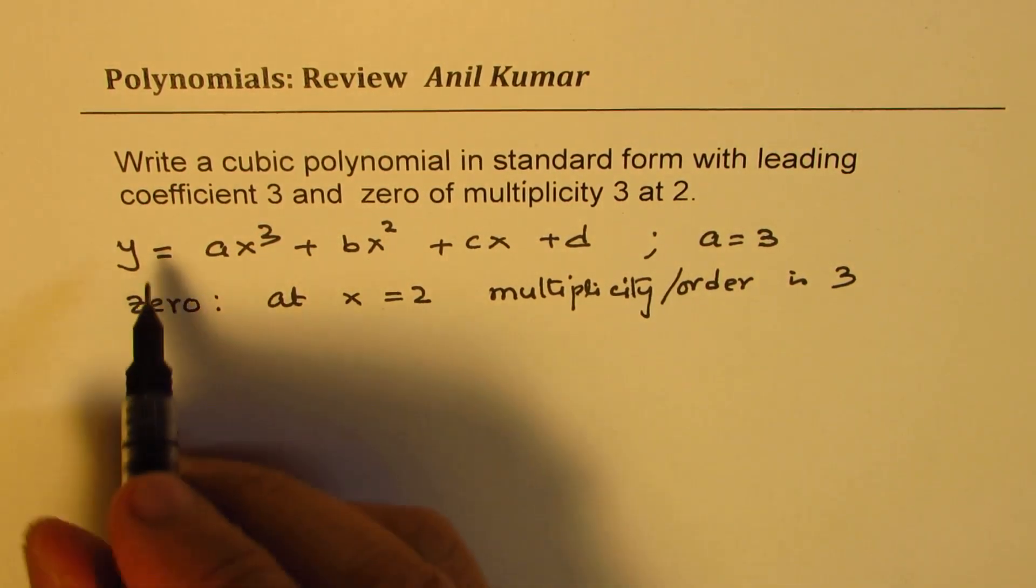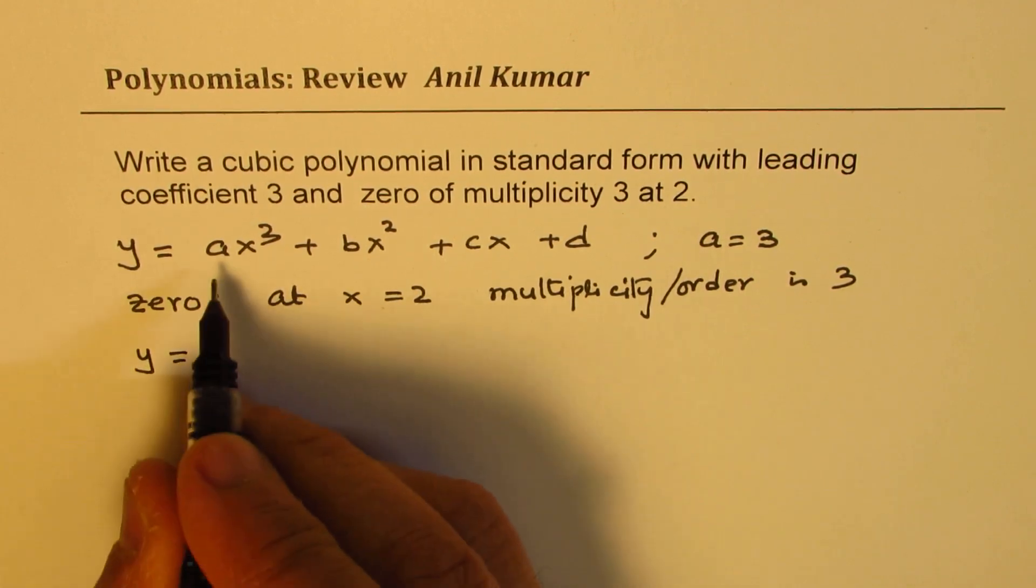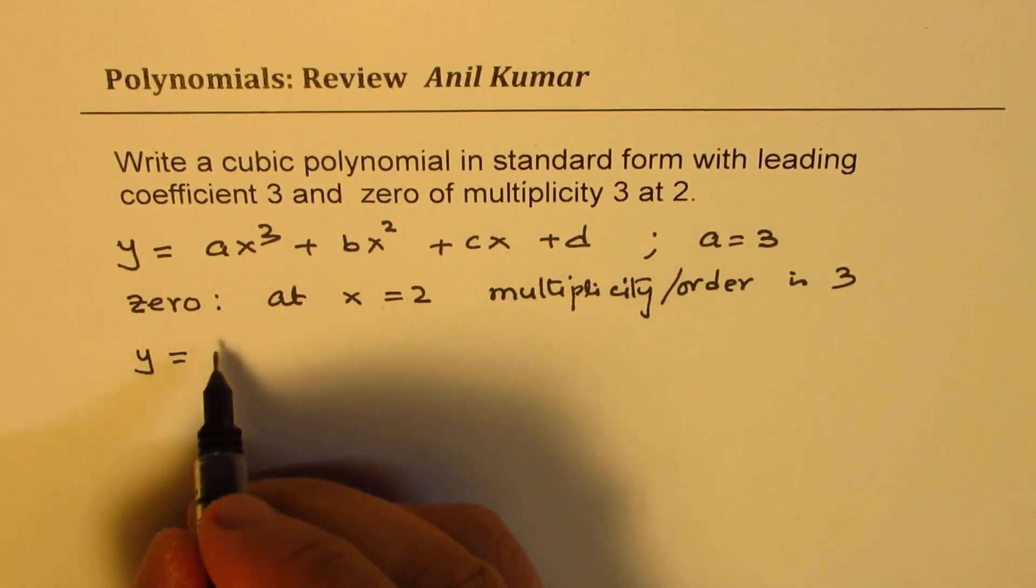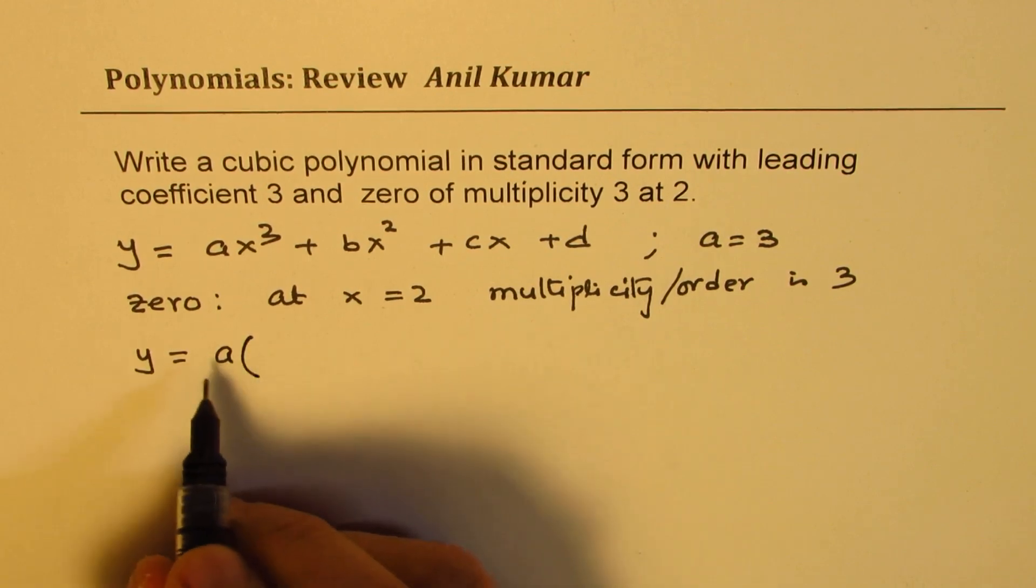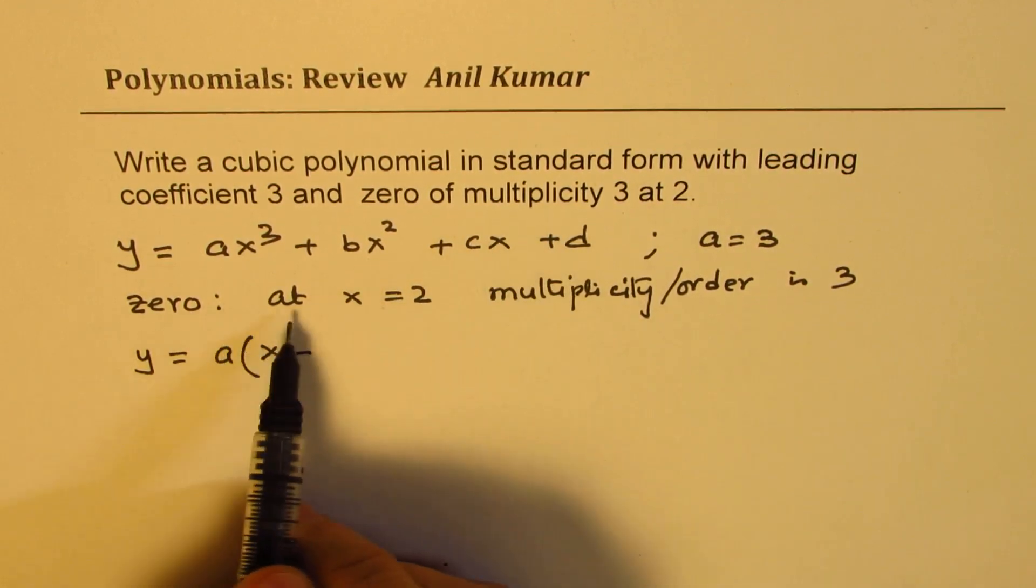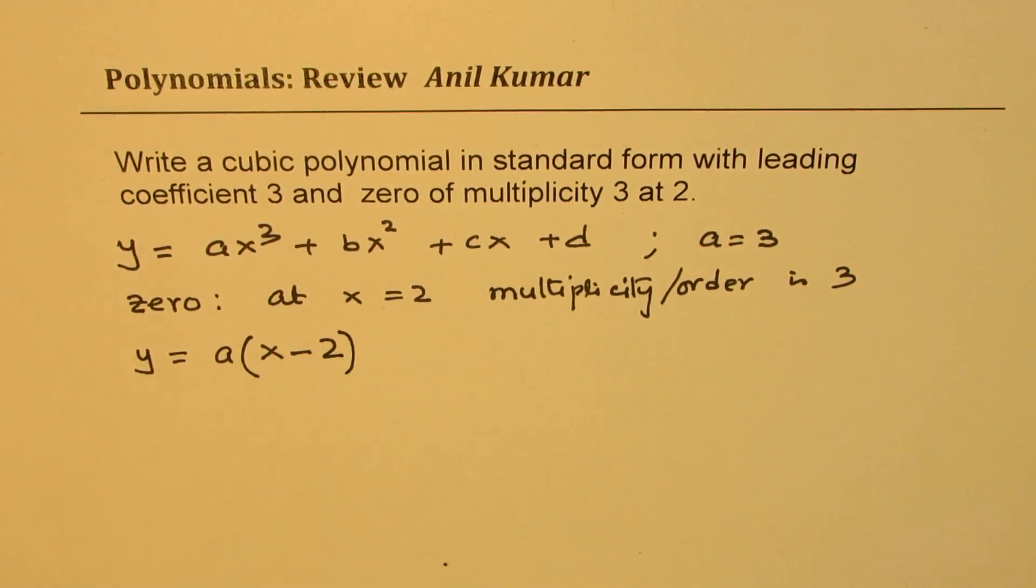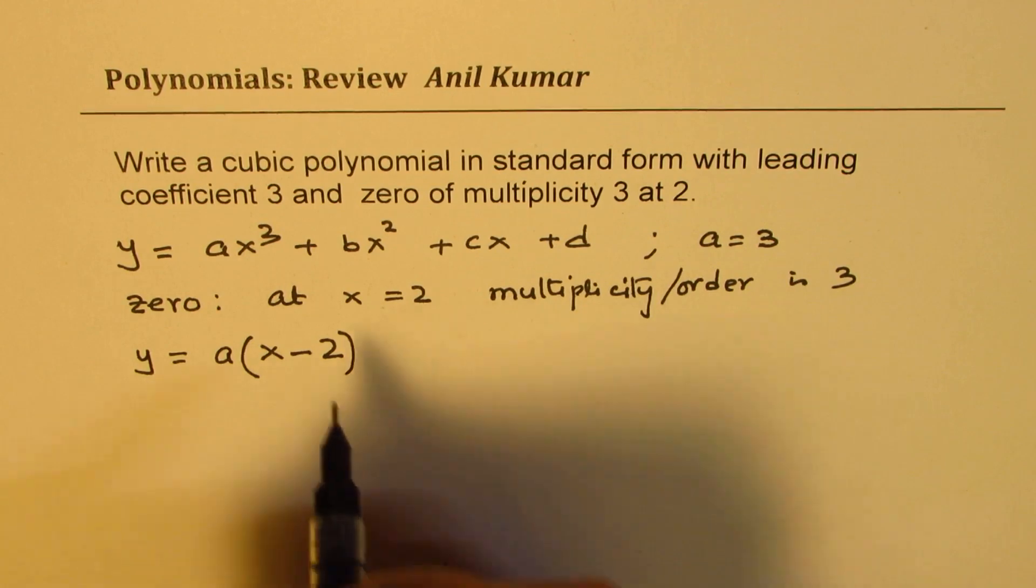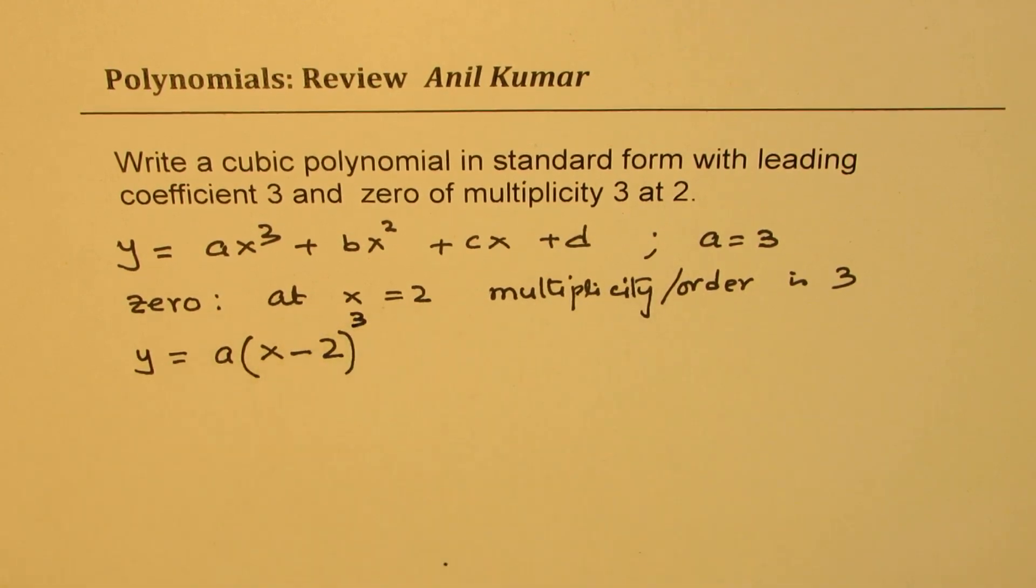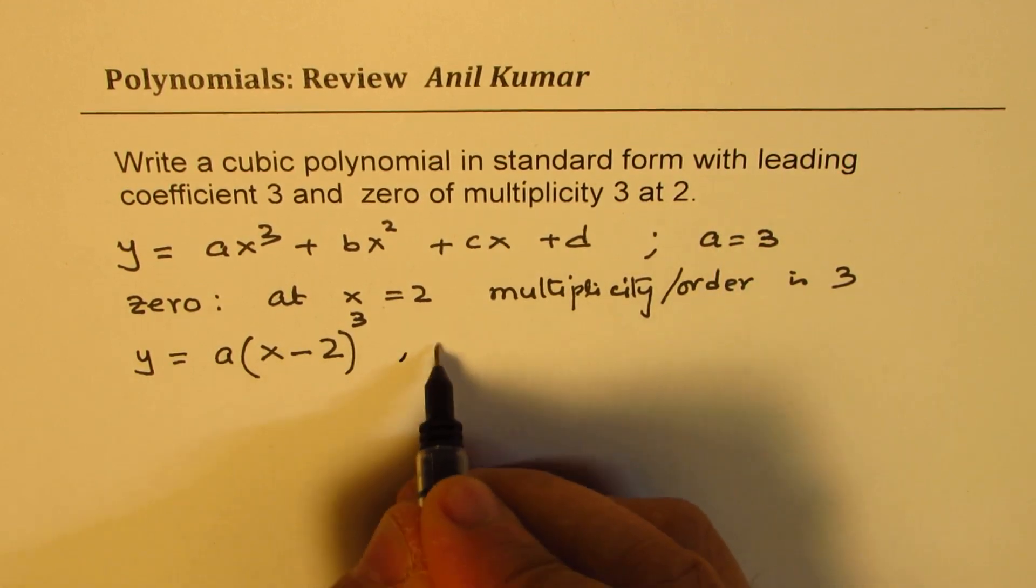Let us see how to write this equation. From the zero itself we can actually get our equation. We have a(x - 2), so x - 2 will give us that zero, and the order is 3 so it is cubed. We get a cubic equation here where we clearly know that a = 3.